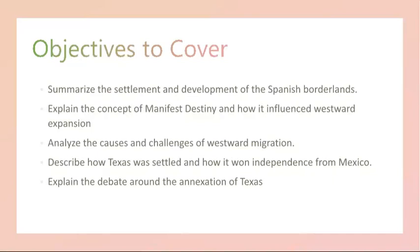The 19th century saw the continuation of Spanish influence in the American southwest, which includes present-day states like California, Arizona, New Mexico, and Texas. Spanish settlement in these regions had deep historical roots dating back to the 16th and 17th centuries. By the 19th century, the area was characterized by a blend of Spanish, Native American, and Mexican cultures.